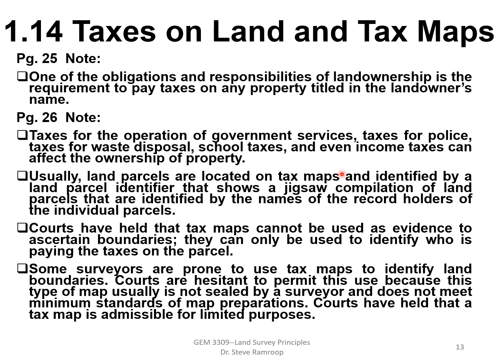Local authorities collect taxes for the operation of government services — police, waste disposal, and other services — to have a community that is safe and provides the basic necessities for a comfortable life. Land parcels are located on tax maps and identified by a land parcel ID number. A tract of land has a unique ID number that shows a jigsaw compilation of land parcels identified by the names of record holders.